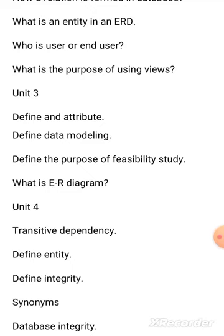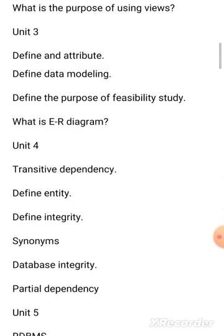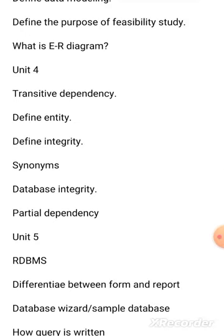From Chapter 3, you will have to prepare just four questions: define attribute, define data modeling, define the purpose of a feasibility study, and what is an ER diagram. Now from Chapter 5, we have: transitive dependency, define entity, define integrity, synonyms, database integrity, and partial dependency. Prepare the definitions of all these topics.